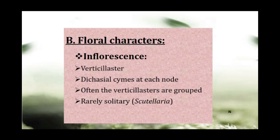Coming to the floral characters: inflorescence is the first floral character. Very commonly, verticillaster inflorescence is present in this family, consisting of a pair of condensed dichasial cymes at each node. At each node of the stem, two axillary opposite cymes develop on either side.